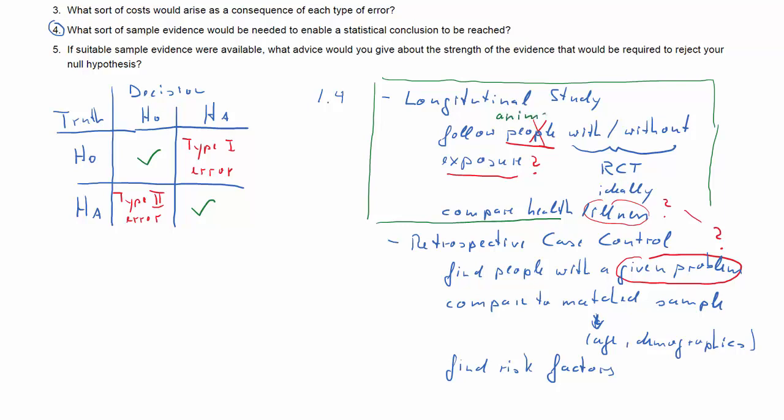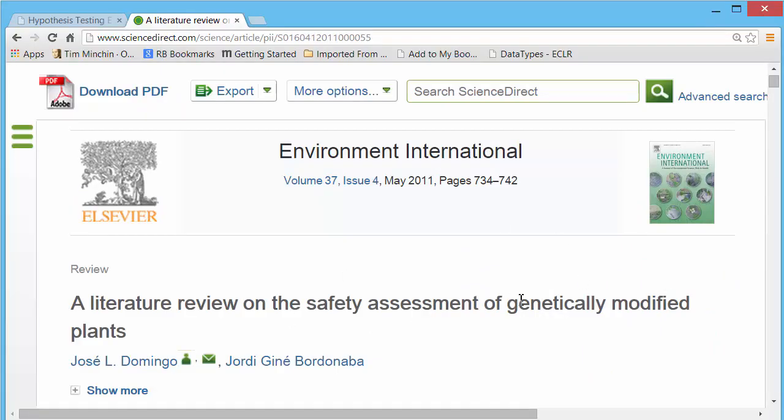It's longitudinal studies, but since we can't use people, what people have used is animals. They do lab studies on animals which are fed with GM food and a control group without GM food, and then you look at some sort of health indicators. Here's an example of such a study from Environmental International.